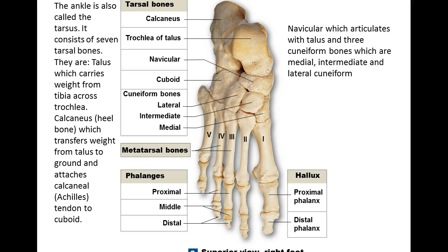The talus is the bone that the tibia articulates with, carrying weight from the tibia across the trochlea. Thinking about it from the ground up, the weight of your footfall is transferred from the foot up to the tibia. The calcaneus is the heel bone. If you pay attention to your gait, your heel strike will be first on the calcaneus, and then weight is transferred up to the talus.